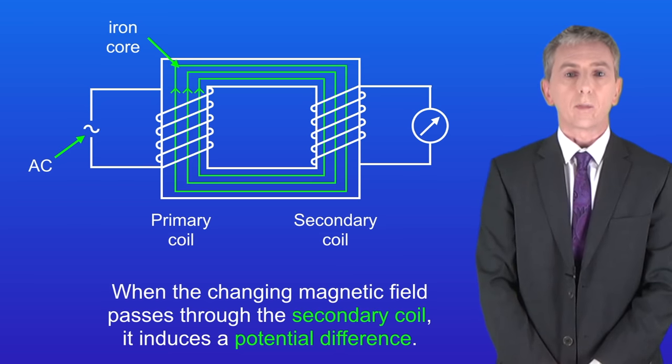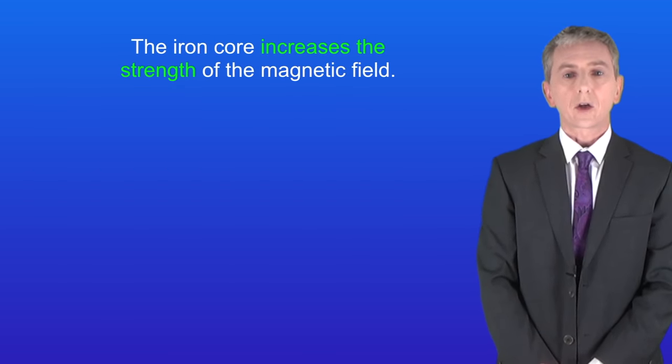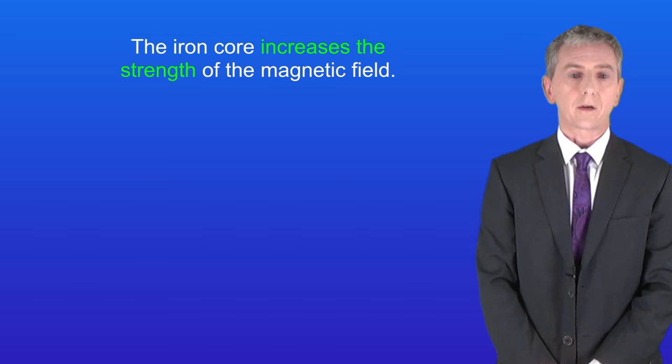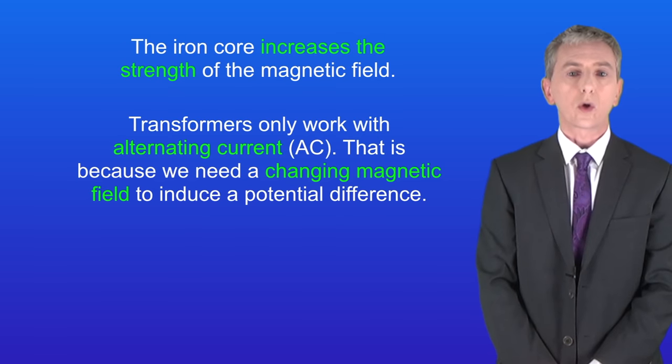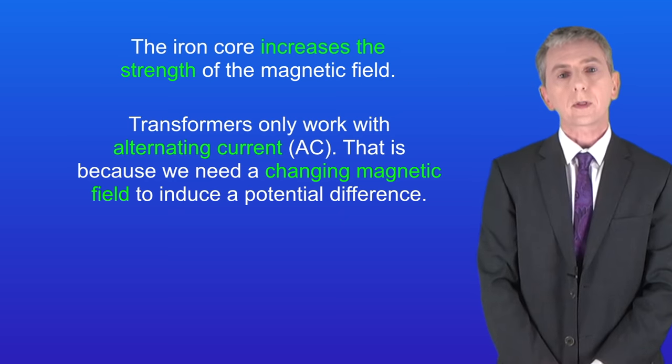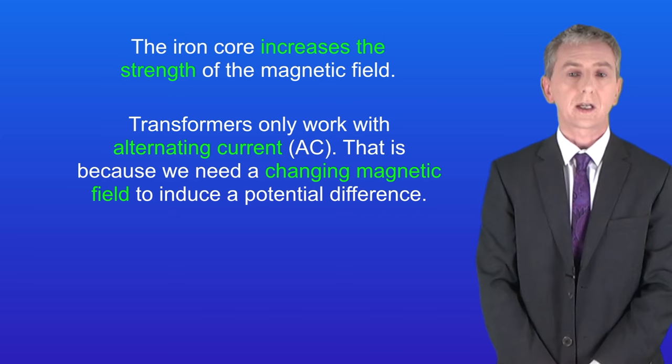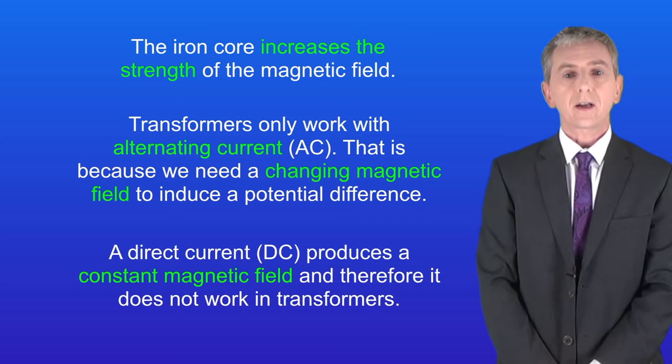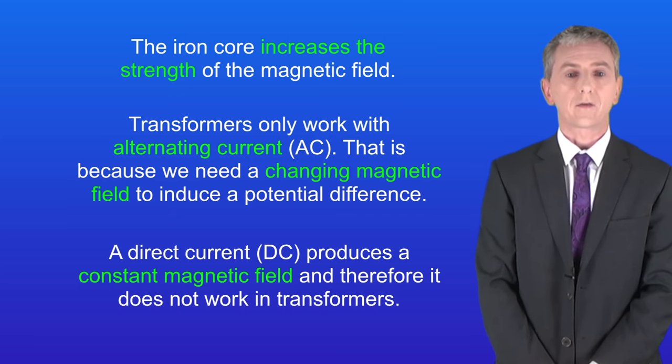There are two important points here. Firstly, the iron core increases the strength of the magnetic field. Secondly, transformers only work with alternating current because we need a changing magnetic field to induce a potential difference. A direct current produces a constant magnetic field and therefore does not work in transformers.